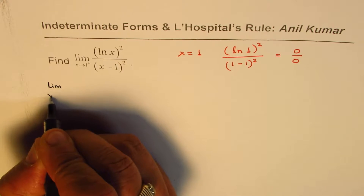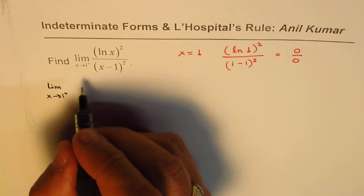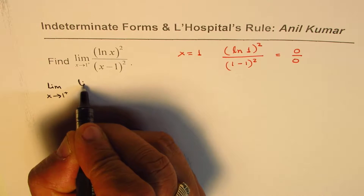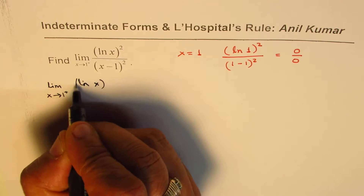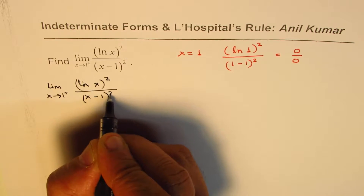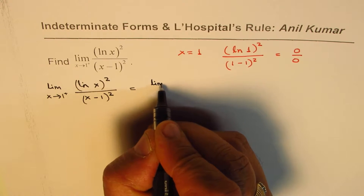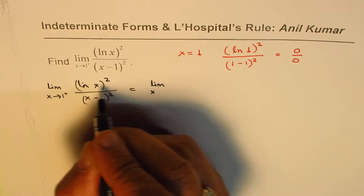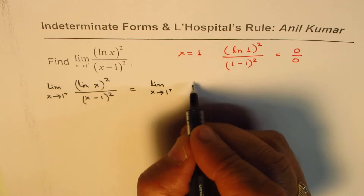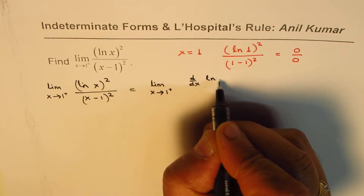So we have the limit as x approaches 1 from the right side. Remember, L'Hôpital's rule can be applied to one-sided limits as well. This is (ln x)² divided by (x−1)². This limit is the same as the limit of the ratio of their derivatives — that's L'Hôpital's rule — so we can write this as d/dx of (ln x)² divided by d/dx of (x−1)².